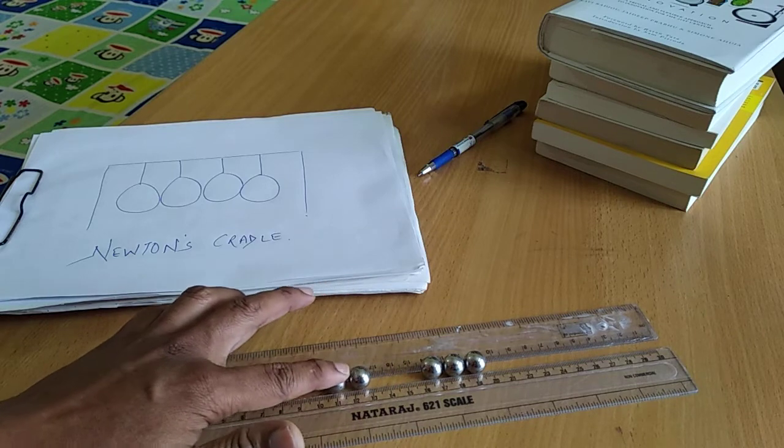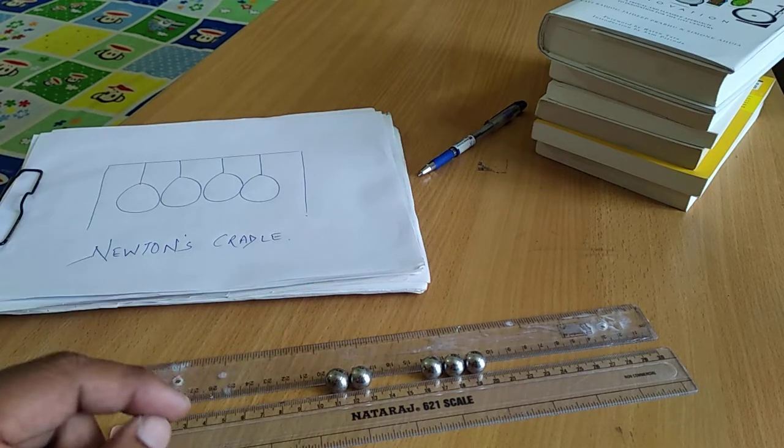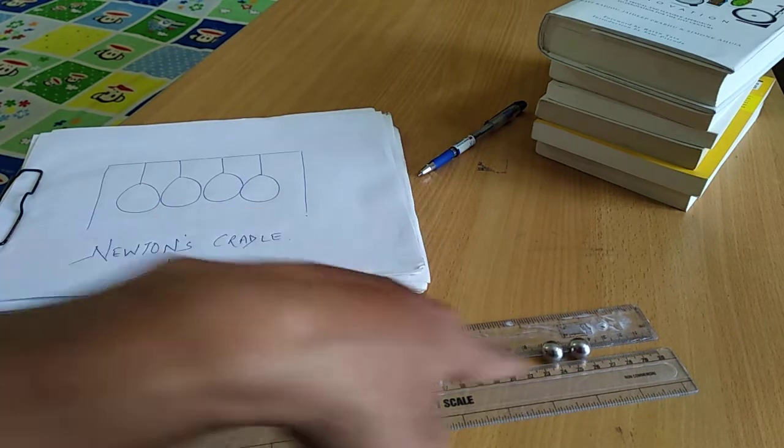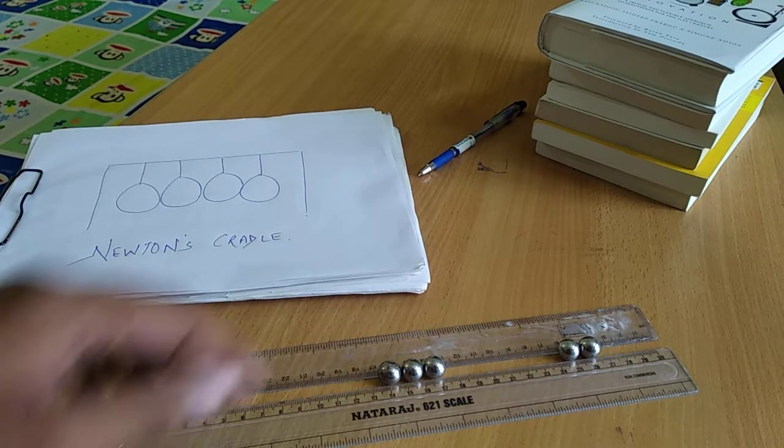If you took two spheres and send them, you can see that two are going from that side.